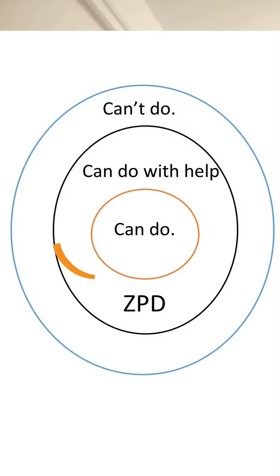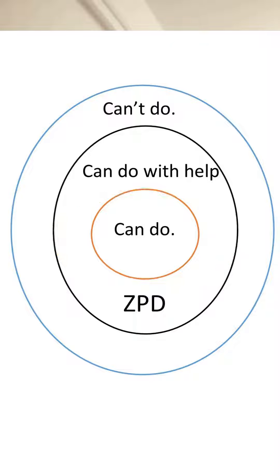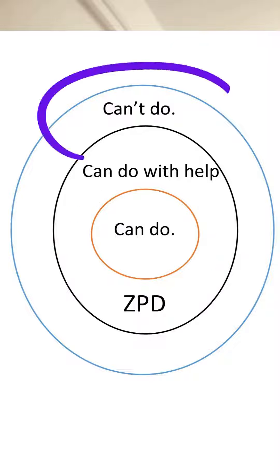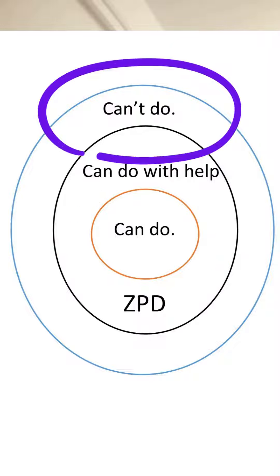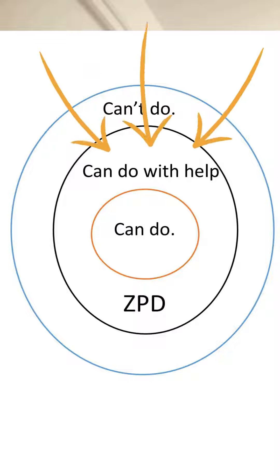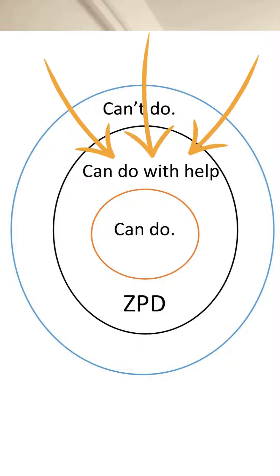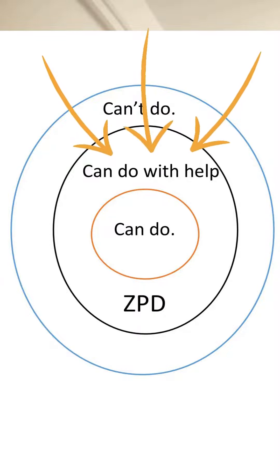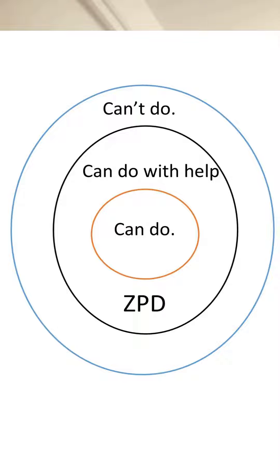We already have things that we can do already. We also have things that are so difficult that we can't do them even with lots of help. In between is the zone of proximal development — this is what we can do but only when we get a little help.